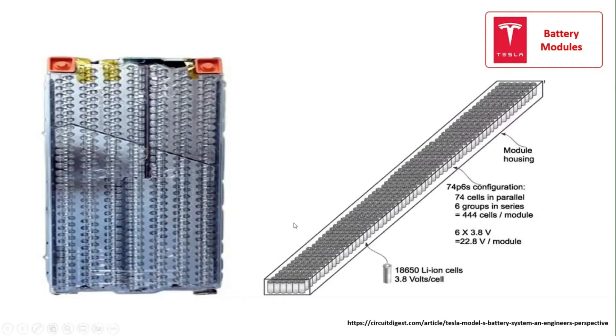Each battery module is based on the 6S74P configuration, in which six battery cells are connected in series and each of these series has 74 cells connected in parallel. Each of Tesla's modules is rated for 500 amps of continuous current with 750 amps of peak current.